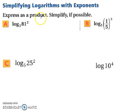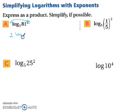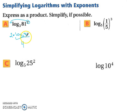Let's express each as a product and simplify. We have log base 3 of 81 to the second power. The exponent 2 comes down in front, giving us 2 times log base 3 of 81. Log base 3 of 81 equals 4, because 3 to the fourth power is 81. So we have 2 times 4, which equals 8.